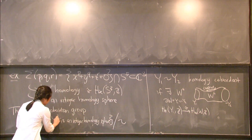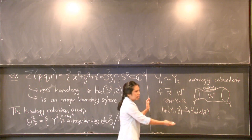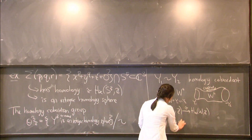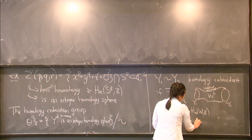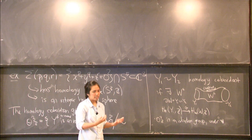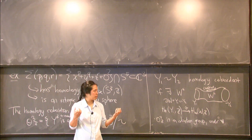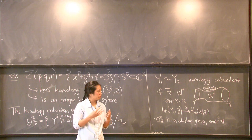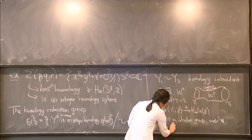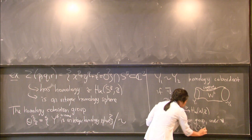I do want Y to be oriented. Under this equivalence relation, θ³_Z becomes an abelian group under the operation of connected sum. Connected sum is an operation on two three manifolds: take their disjoint union, delete a copy of B³ from each, and glue them together along the boundary. In this group, S³ is the identity, and the inverses are given by orientation reversal.